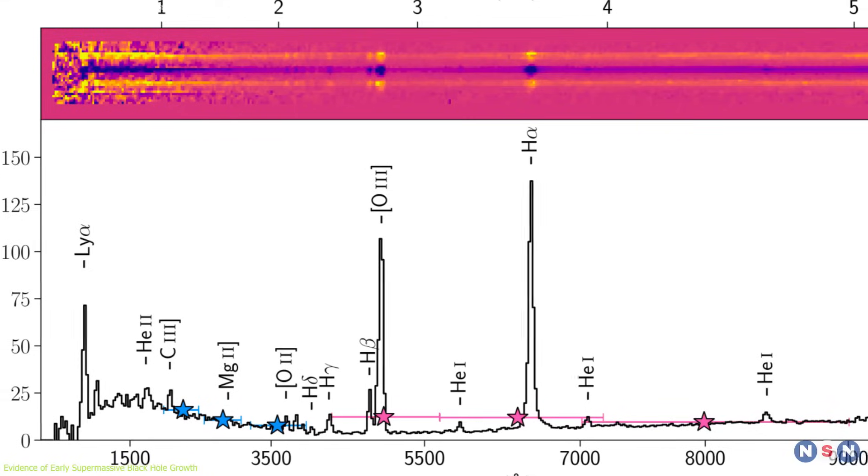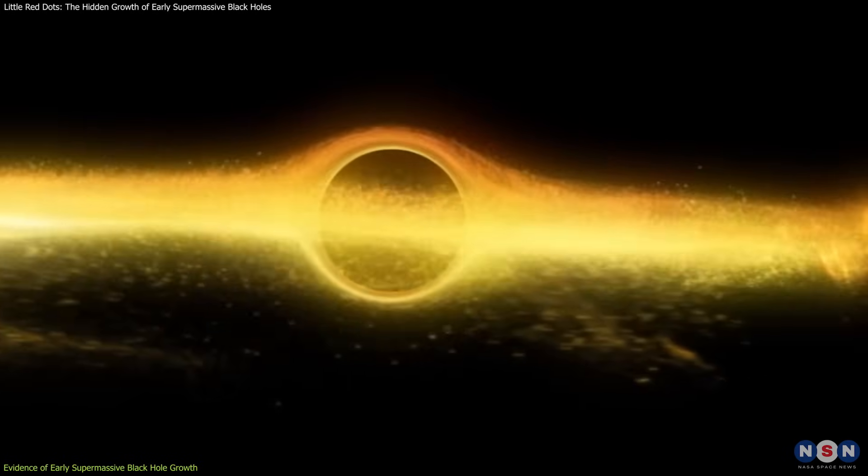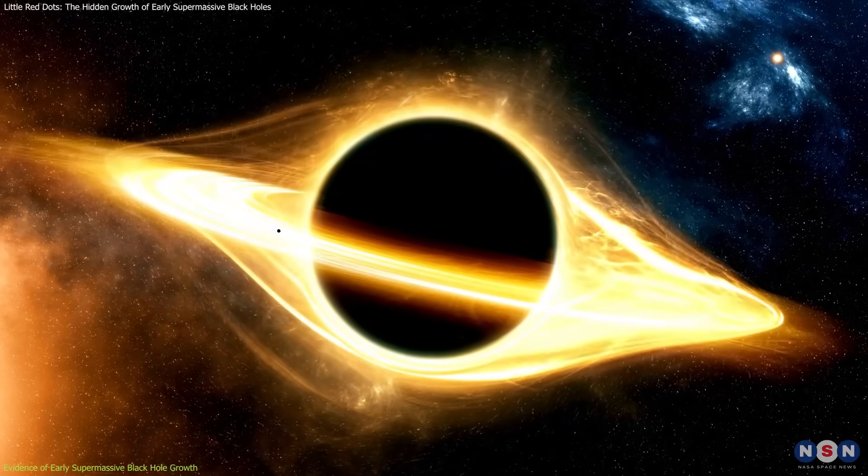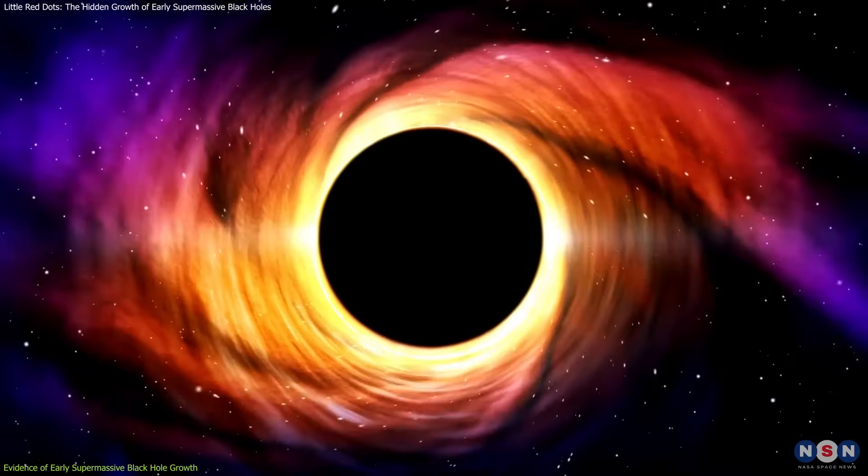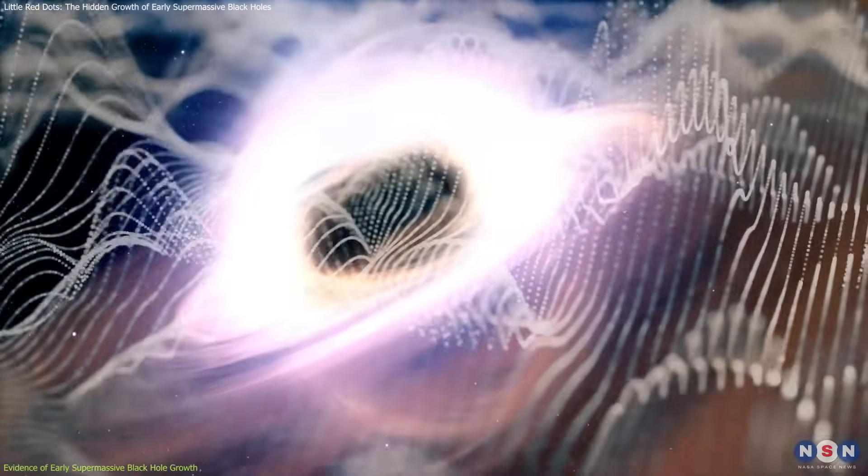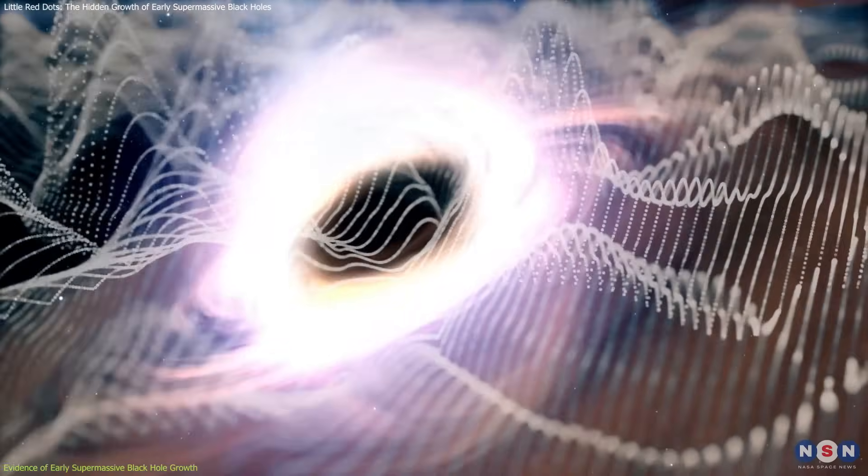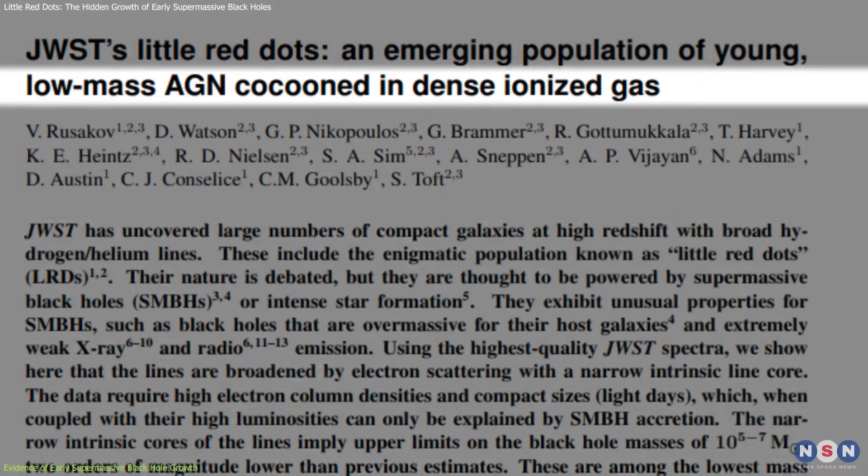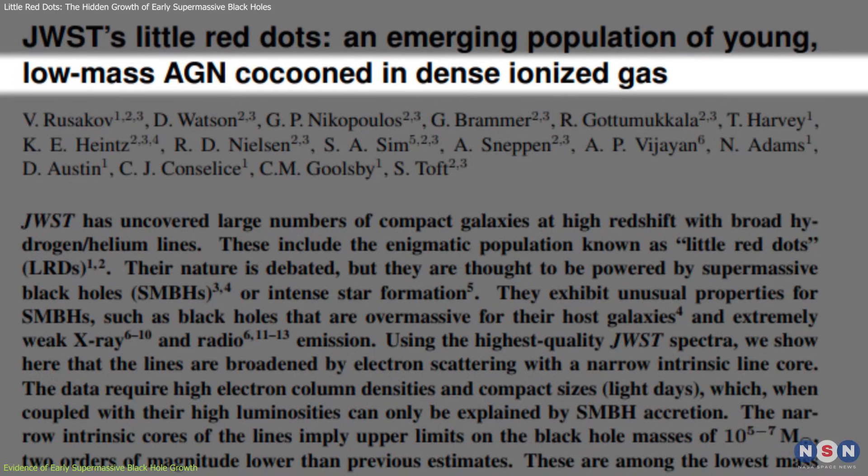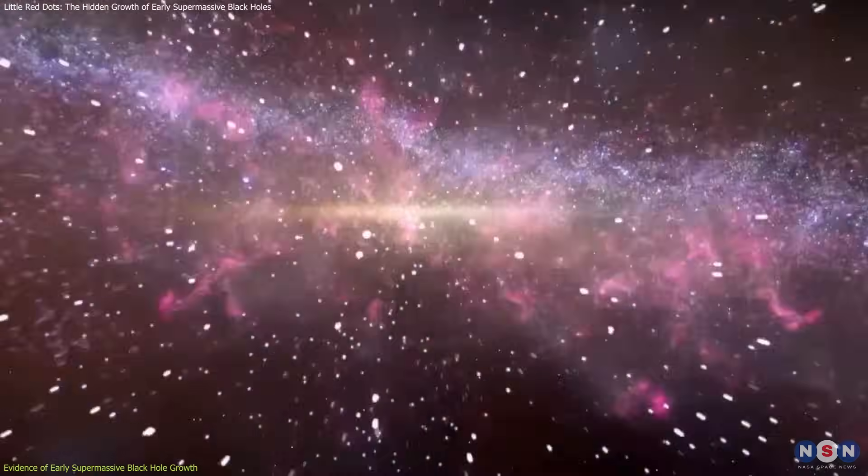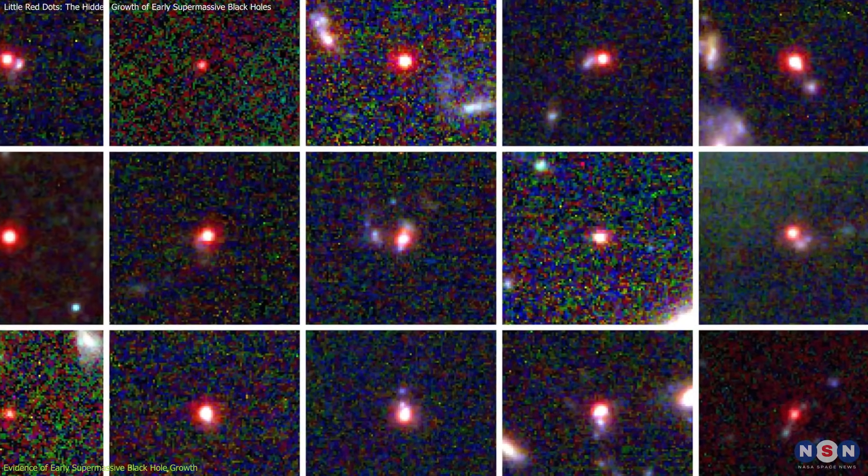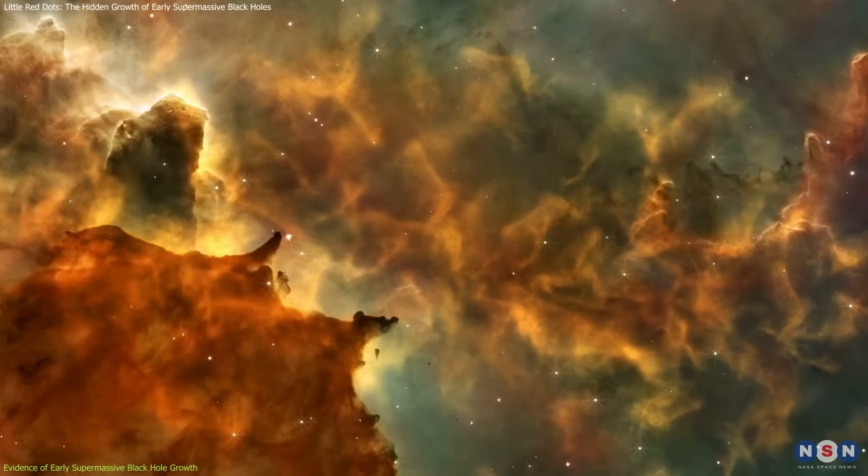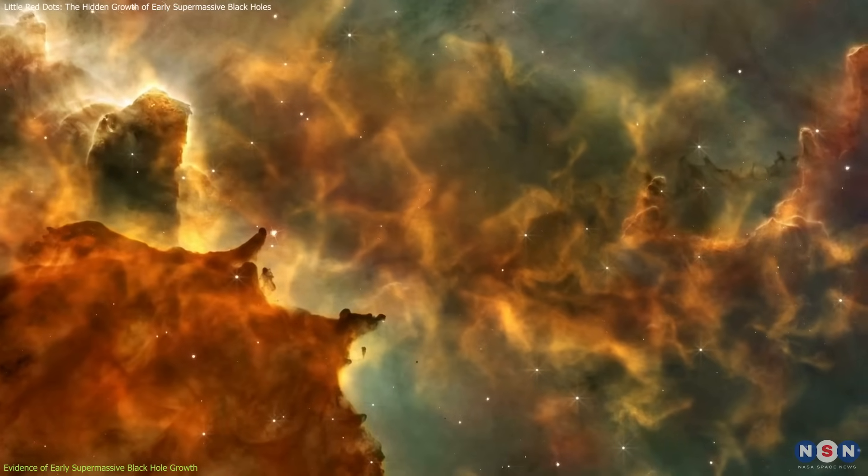The presence of broad spectral lines and fast-moving gas in LRDs strongly suggests that these objects are powered by accreting supermassive black holes, rapidly consuming matter. However, their lack of X-ray and radio emissions challenges the standard AGN model. As the new study suggests, the dense ionized clouds cocooning these black holes absorb high-energy radiation, making them appear as bright infrared dots rather than traditional AGNs. But if this gas cloud is so thick, how do we see the LRDs at all?